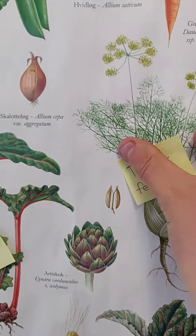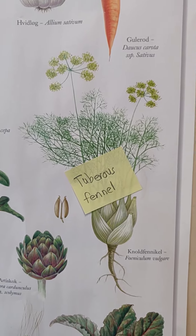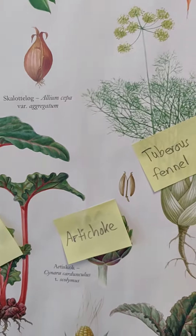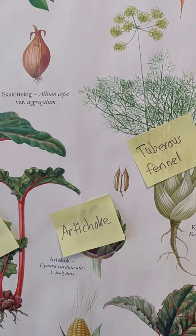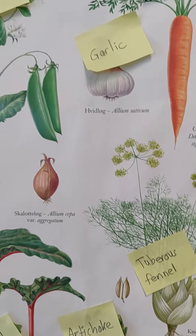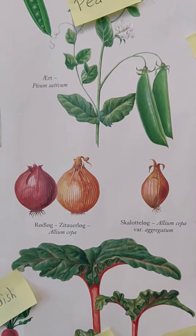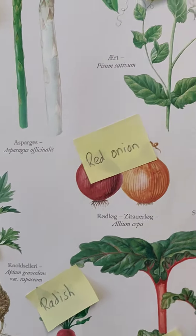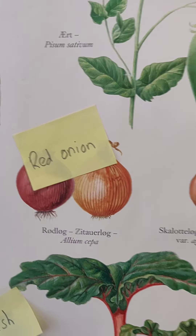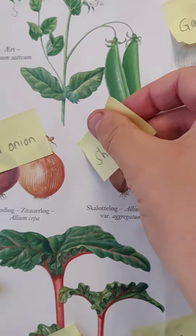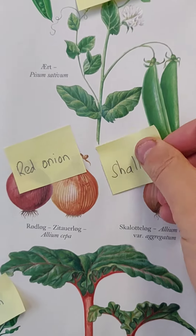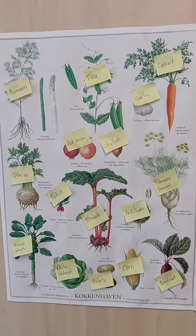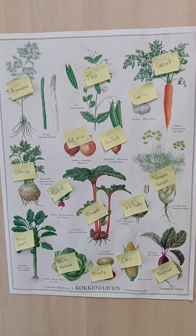And then we'll move up here to tuberous fennel, and just next to tuberous fennel is artichoke. And then in the middle, red onion on the left, and on the right, shallots. There you go — vegetables!